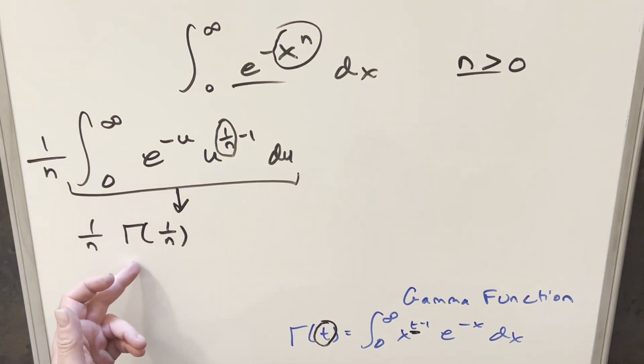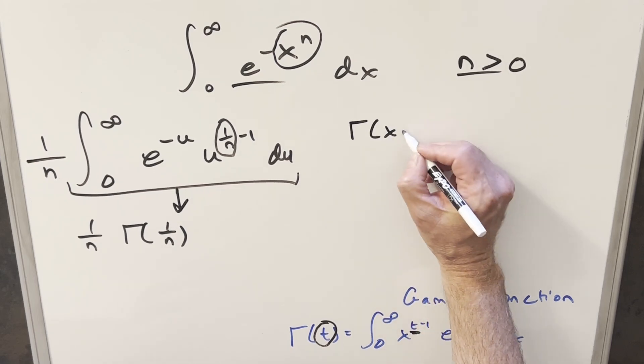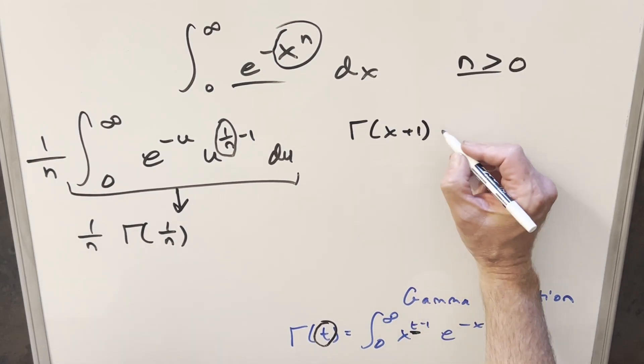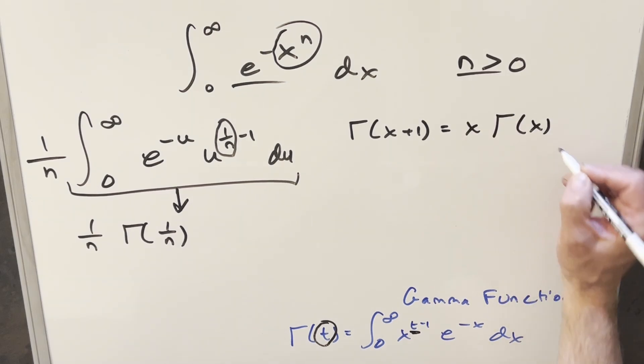At this point we're basically done, but we can use another formula to clean this up. We have the formula for gamma of x plus 1. I don't want to use n because we're using it there. This can be written as x times gamma of x.